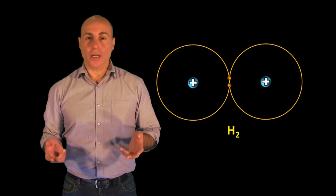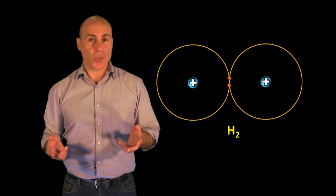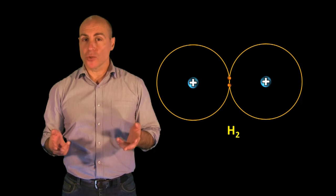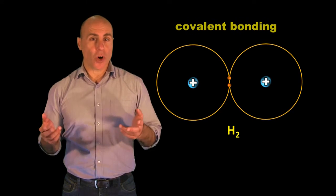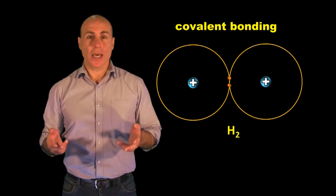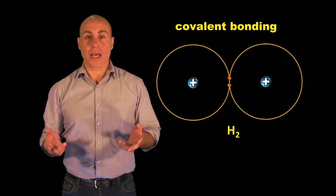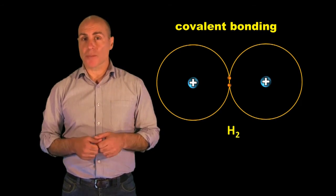This type of bonding, where pairs of electrons are mutually attracted by the nuclei of two different atoms, is called covalent bonding. A molecule, by definition, is any group of two or more atoms that are held together by covalent bonds.